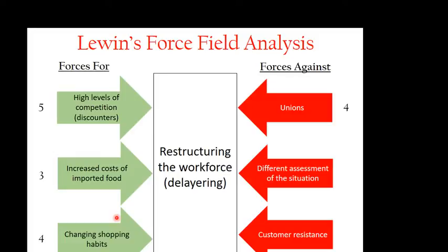Secondly, we might have a different assessment of the situation. Speaking in February 2018, Sainsbury's had a relatively good Christmas in 2017, so staff might be feeling positive — and then suddenly being told their job is at risk. They may not understand why that's happening, giving them a different assessment of the situation. I've given that a three, with the argument that we may be able to talk staff around by highlighting the huge levels of competition and the move to online shopping, so some staff will understand the reasons for the change.